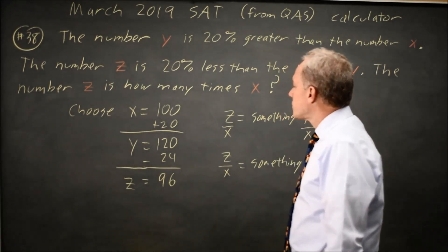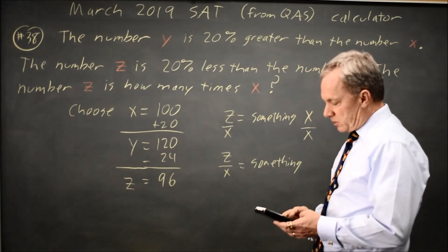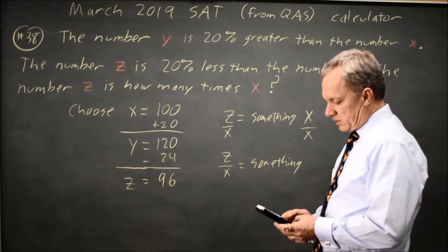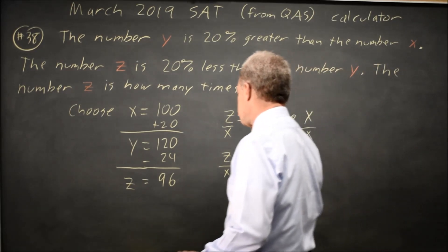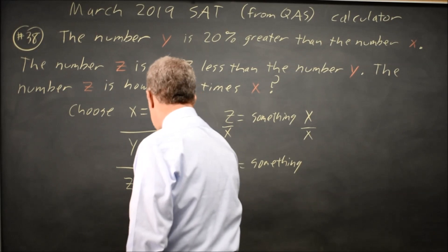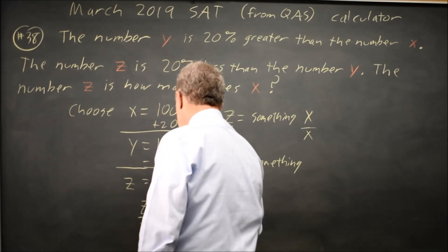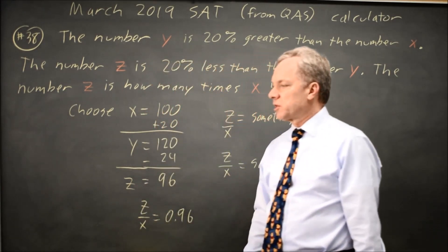where the something is the number they're looking for. So 96 over 100 is of course 0.96 and that's the answer they wanted.